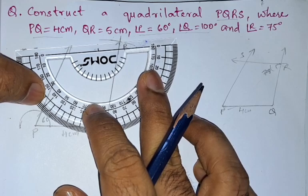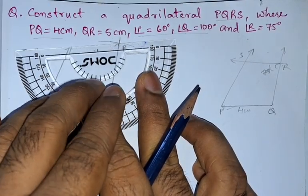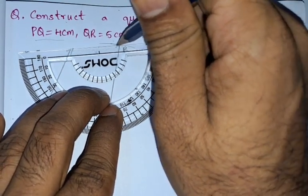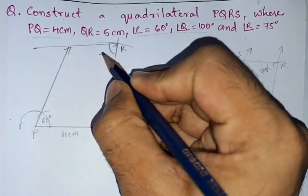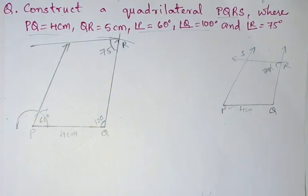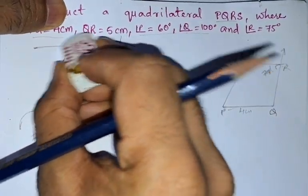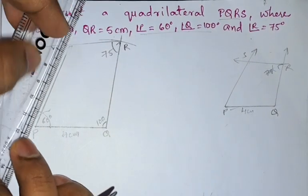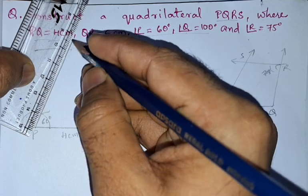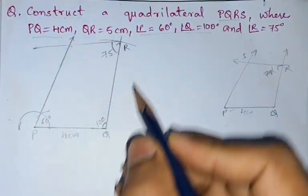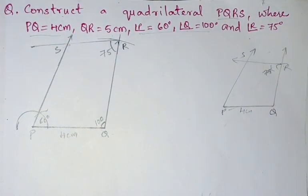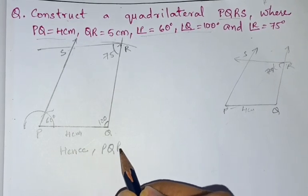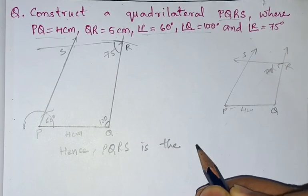Now we can join this. So this is 75, and here also it did not meet the ray so we will extend it. This is PQRS. Hence PQRS is the required quadrilateral.